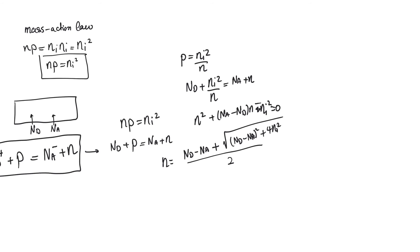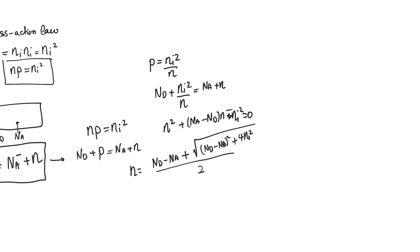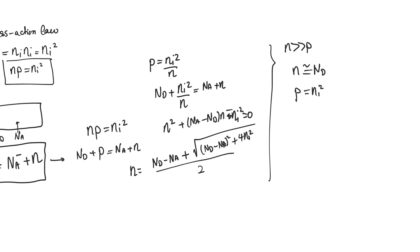These are exact expressions for N and P, but there are very important approximations we can make. If N is much greater than P — which happens when we are only using donors, or when donor concentration is much larger than acceptor concentration — then P is negligible next to N and Na is negligible next to Nd, giving us N ≈ Nd and P ≈ Ni²/Nd. Similarly, for P-type silicon where P ≫ N, we have P ≈ Na and N ≈ Ni²/Na.